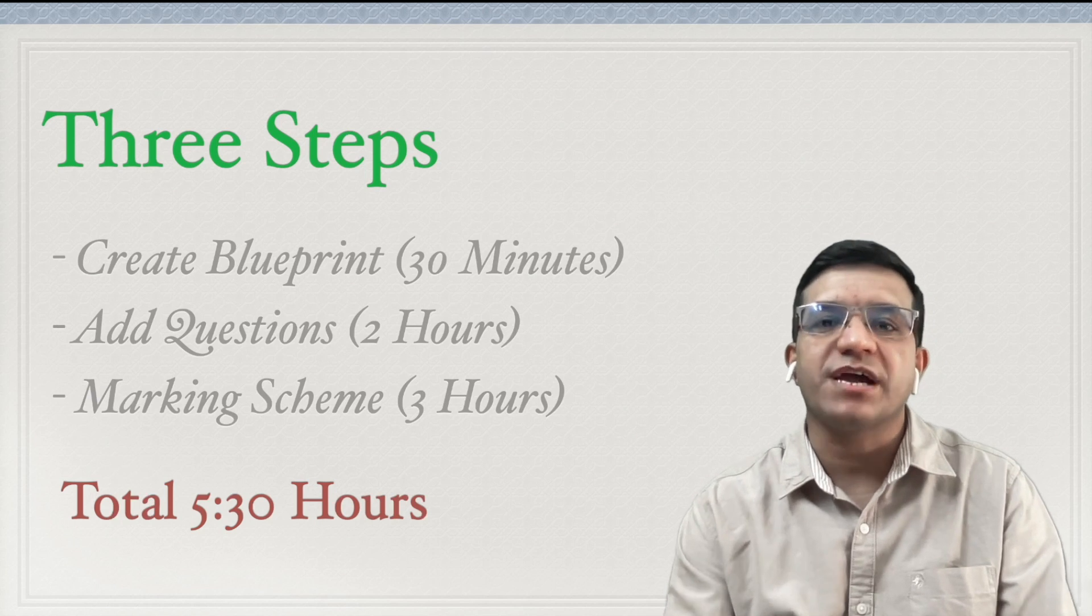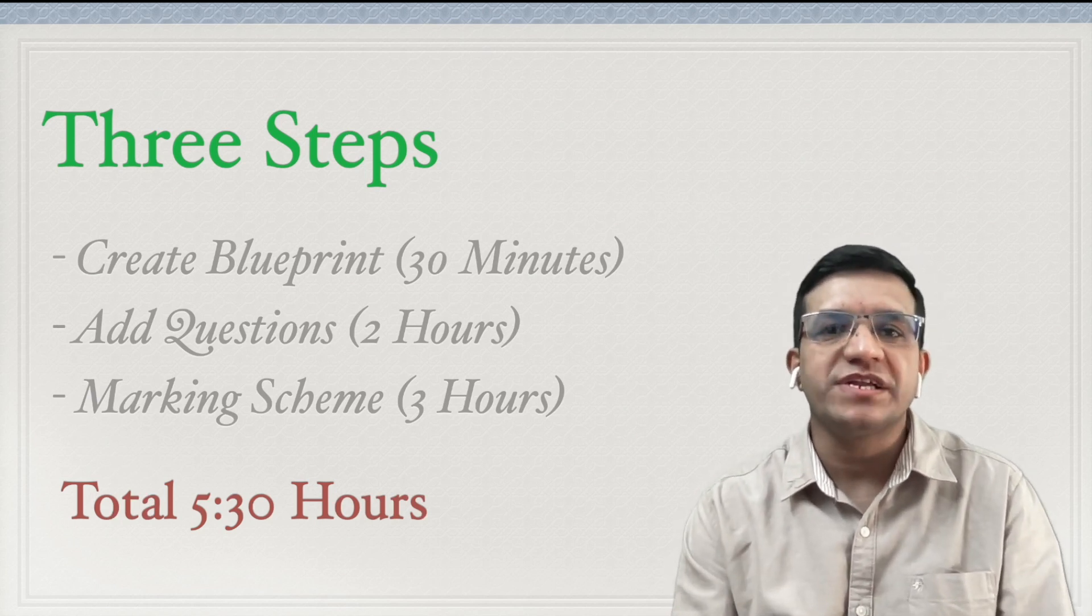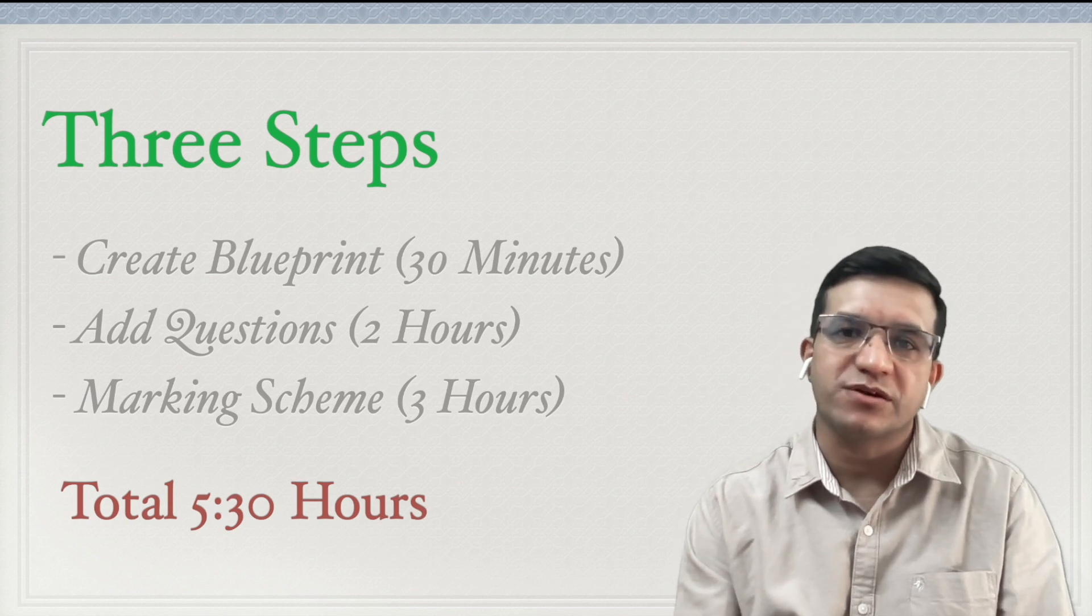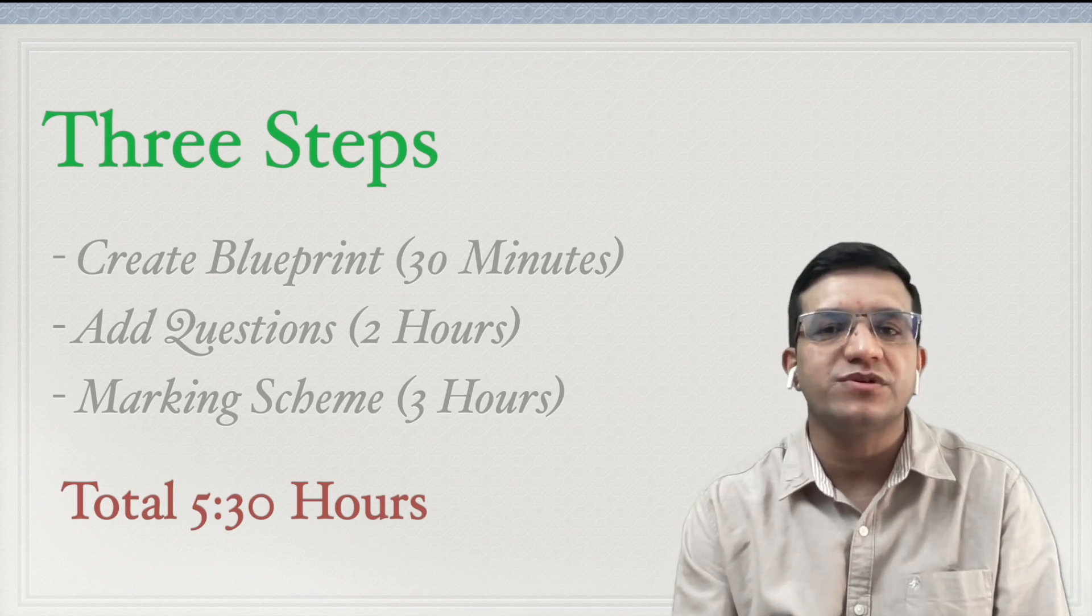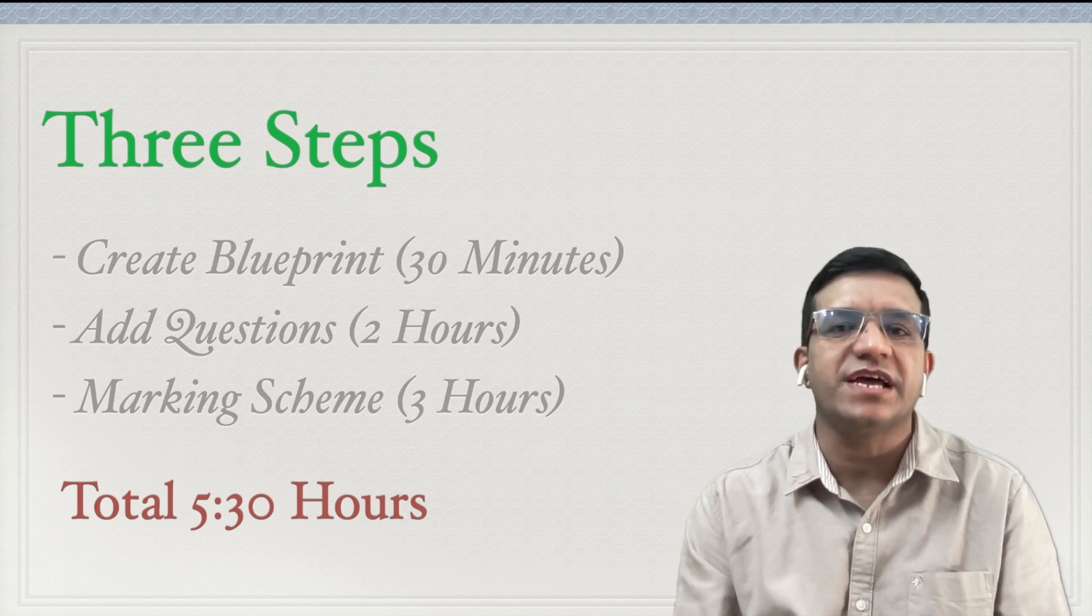Creating question paper is a three-step process. The first step is to create a blueprint. In the blueprint we decide how many questions will be there in the question paper, what will be the weightage of the questions, what will be the typology of the questions, and what will be the difficulty level of the questions. These all we decide and we create a blueprint.